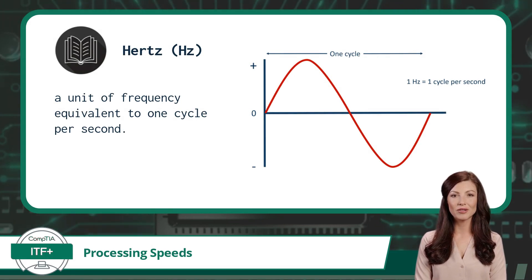Now that we have a base measurement for processing speed, we need to apply our prefixes as a computer processes way more than one instruction each second.